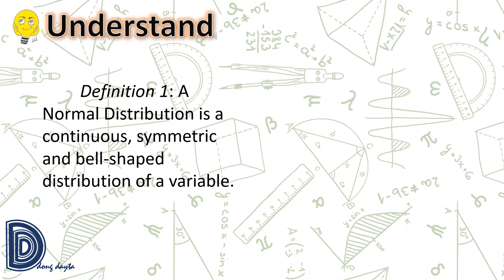Let us have this definition: a normal distribution is a continuous, symmetric, and bell-shaped distribution of a variable.